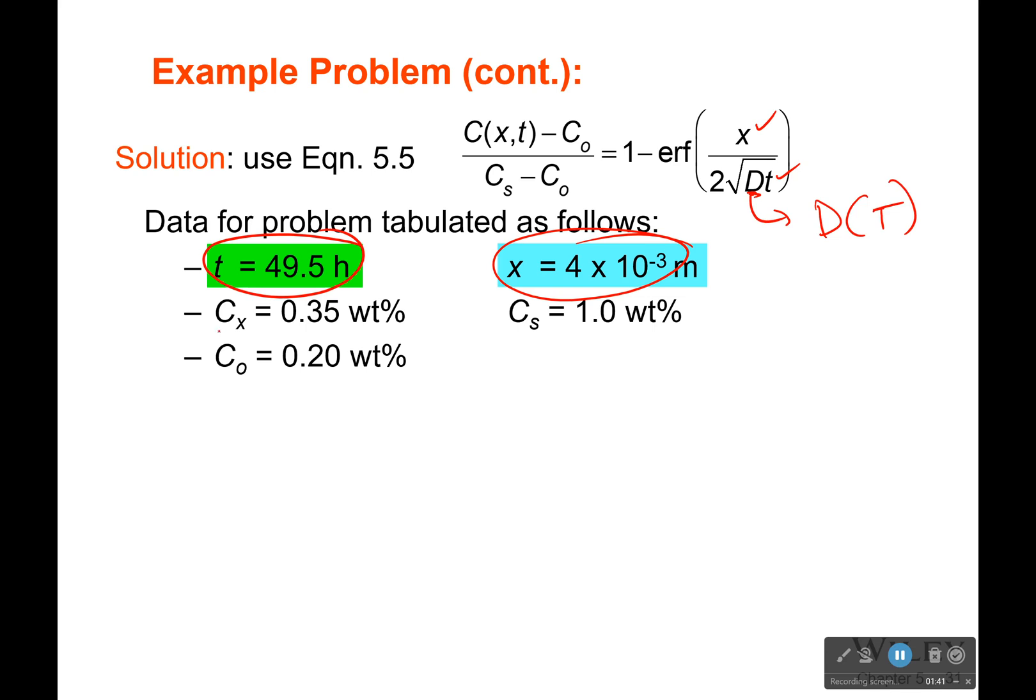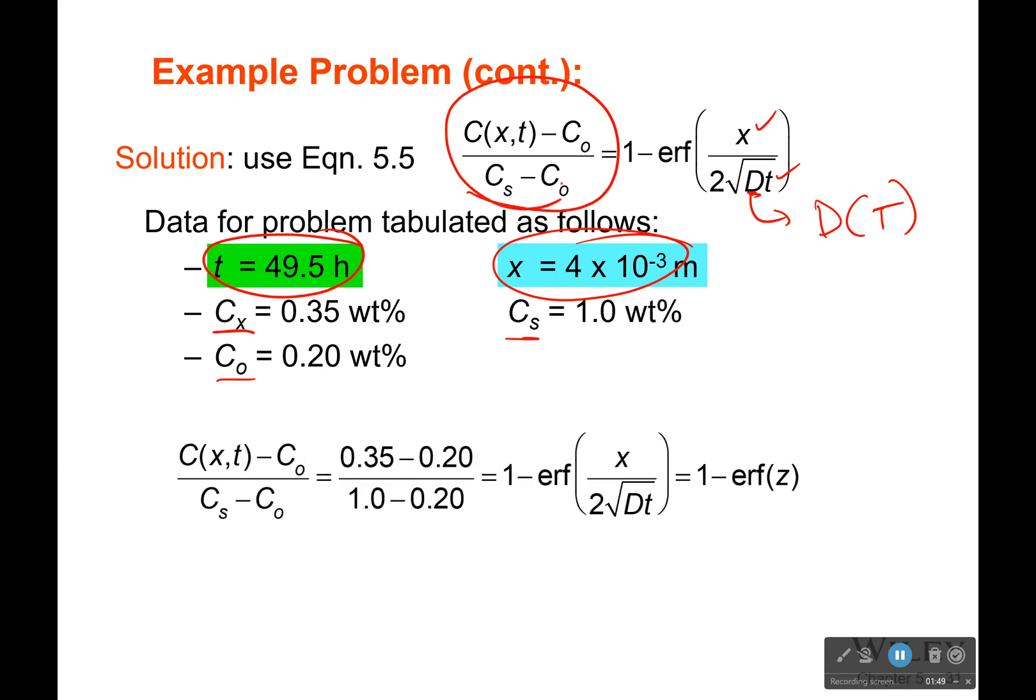We know what our concentration at that position is, initial and surface, so we can calculate this side. What we'll get is that this right here is equal to 1 minus erf of z. Just forget that this is in there right now and just say that it's z for the moment. You're going to look at your tables. So we get that erf z is equal to 0.8125. That's just plugging everything in there.